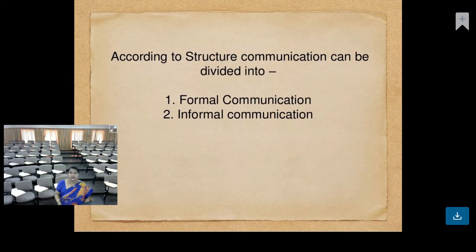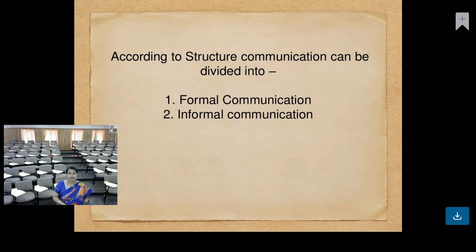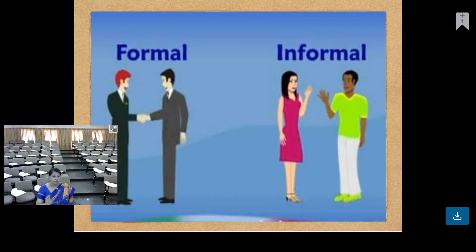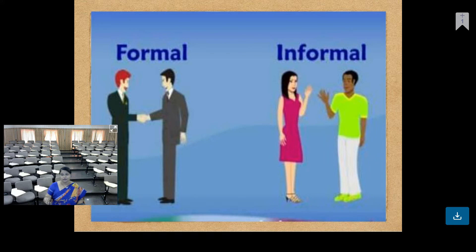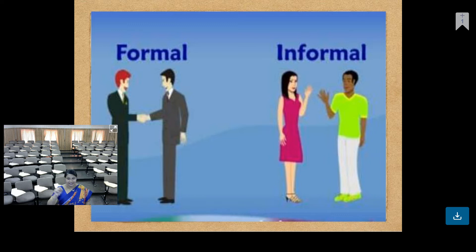Let me start with communication on the basis of structure — that is formal and informal. Can you see the diagram here? Formal and informal. For example, when you are talking to your teacher or lecturer, it is very formal communication. If you are talking to your boss, that is formal communication. But if you are talking to your friends, it is very informal communication. Look at the way they greet each other, their dress code, and their body language — everything speaks about whether it is formal or informal communication.